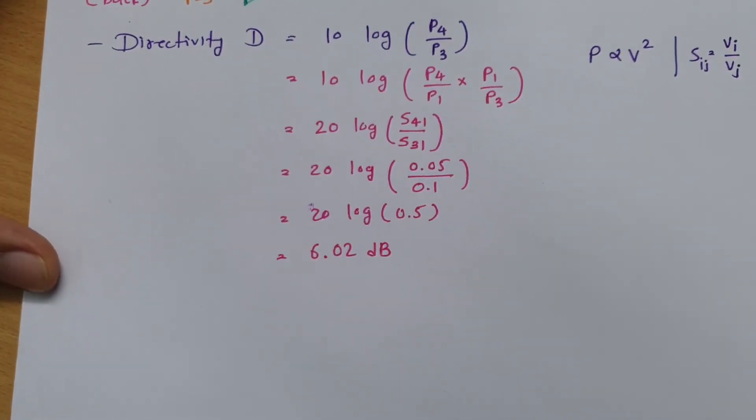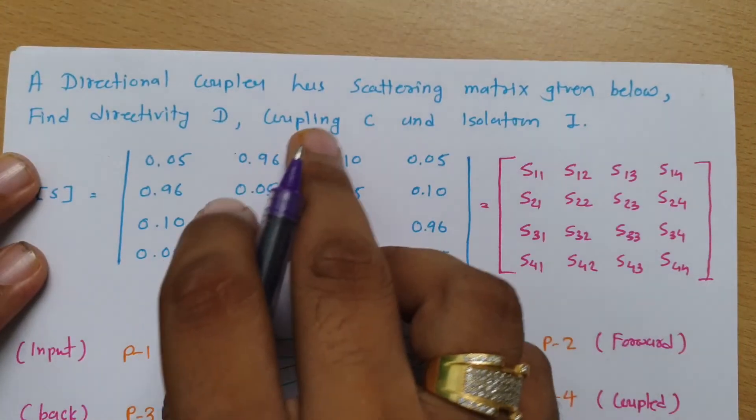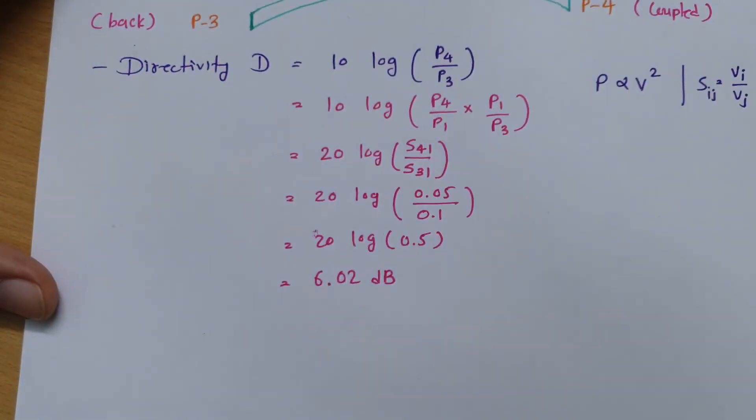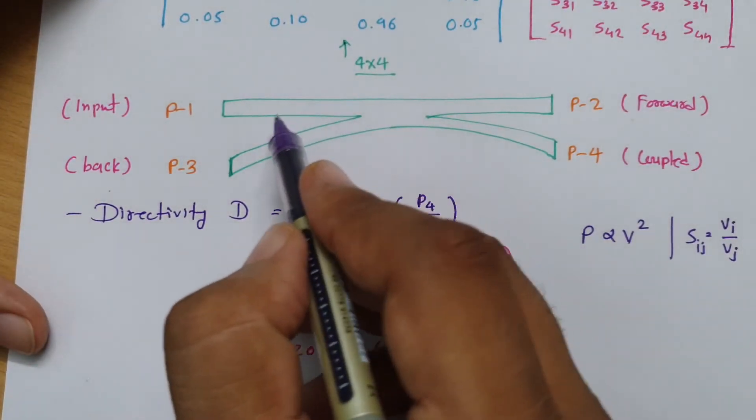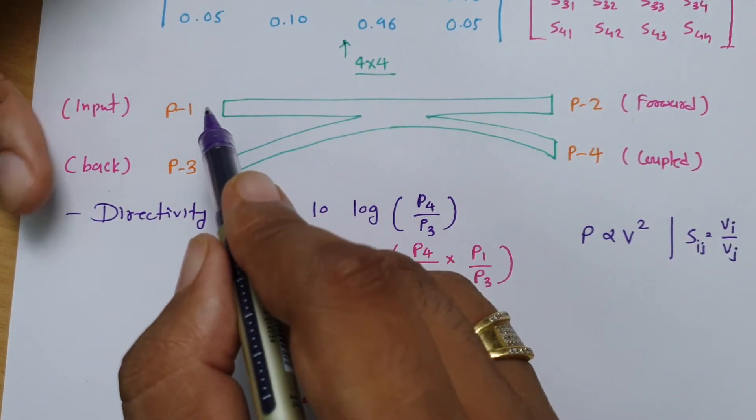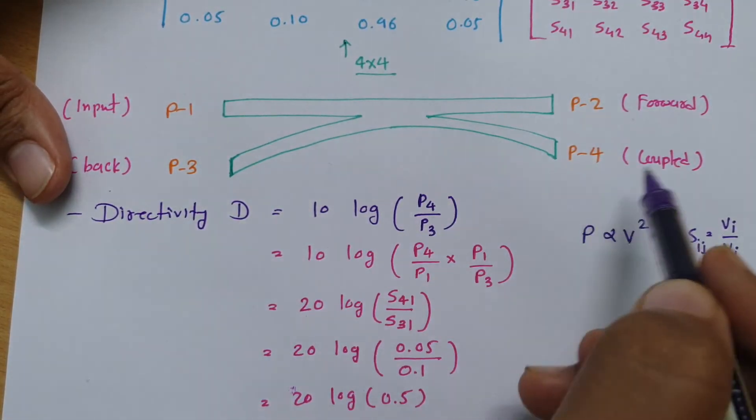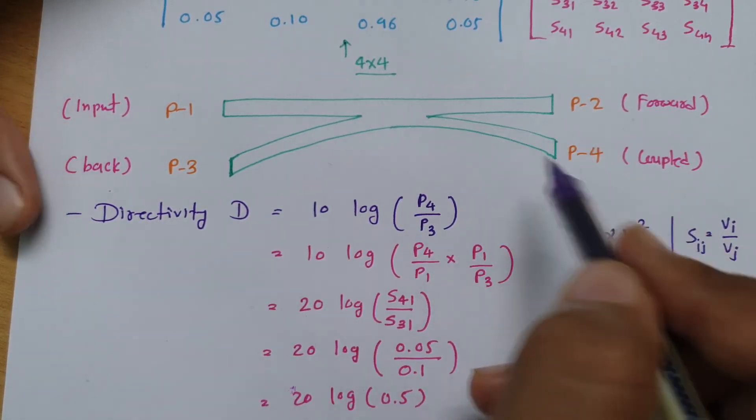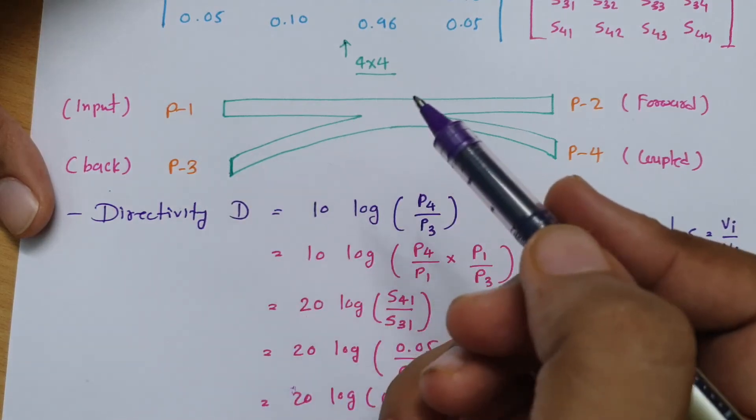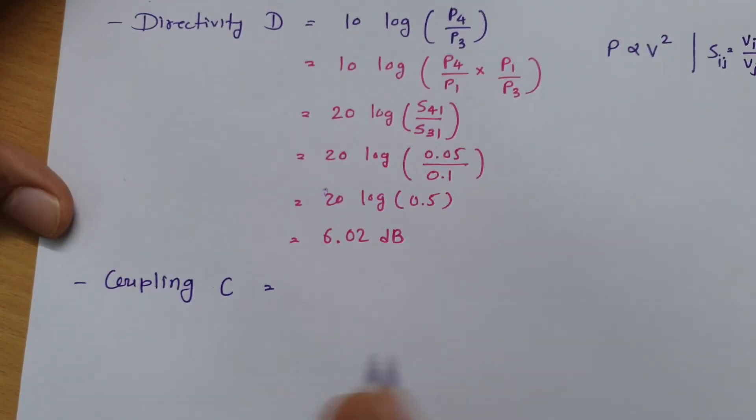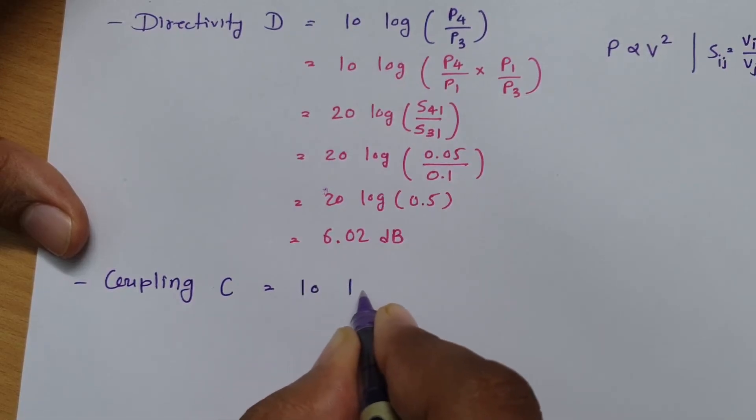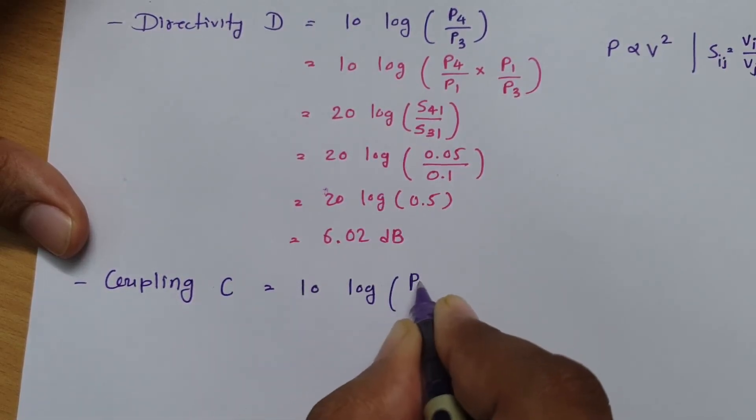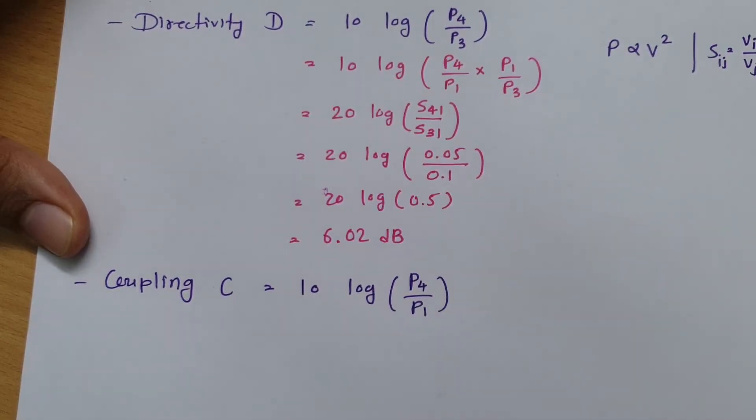Now let us calculate the second parameter, that is coupling coefficient C. What is coupling? If we give input at port 1 and output is coupled at port 4, that is coupling. So it will be 10 log of P4 divided by P1. That is coupling.